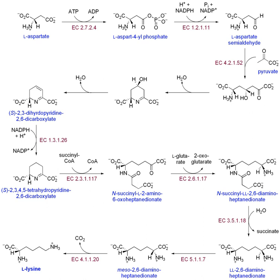Biosynthesis occurs due to a series of chemical reactions. For these reactions to take place, the following elements are necessary. Precursor compounds are the starting molecules or substrates in a reaction — the reactants in a given chemical process. Chemical energy can be found in the form of high-energy molecules, which are required for energetically unfavorable reactions. The hydrolysis of these compounds drives a reaction forward.